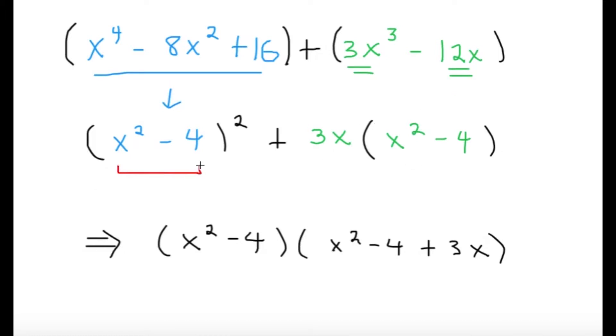It's nice here that x squared minus 4 is a common factor to both terms. So I can factor x squared minus 4 out and I'll be ending with x squared minus 4 on the left term and then 3x on the right term.